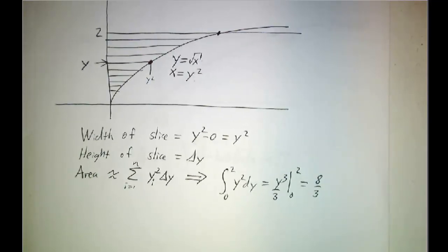Now, of course, the answer is the same no matter which way you slice it. The area of the thing is 8 thirds. You can get that as a sum of vertical slices. You can get that as a sum of horizontal slices. It's the same 8 thirds.